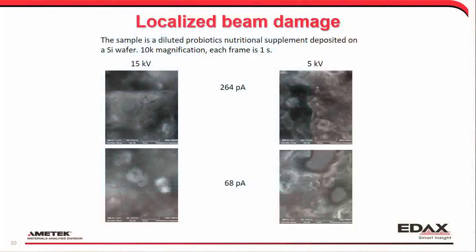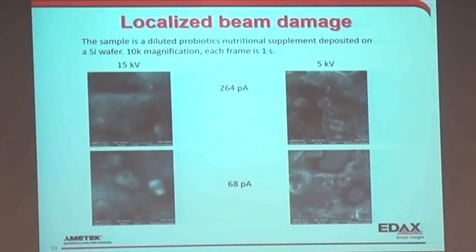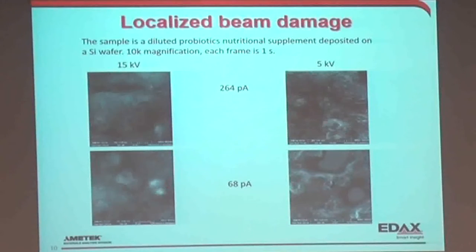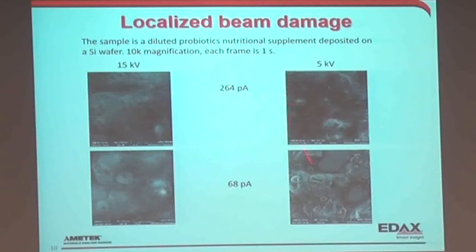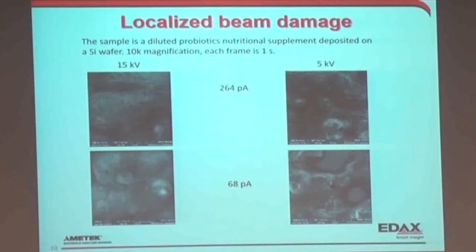That was charging. Now we get to actually destroying our sample with beam damage. I took a silicon wafer and some probiotics, added water to make it less dense, put a drop on the wafer and dried it under vacuum. Everything is at 10,000× magnification and each frame in the videos is one second. Playing these, you can see most samples burn within a few seconds — shown at 15 kV high and low current, 5 kV higher and lower current. The 5 kV low current plays much longer, but there is still beam damage — just a lot slower. At higher settings, we essentially boil off the sample in a matter of seconds.